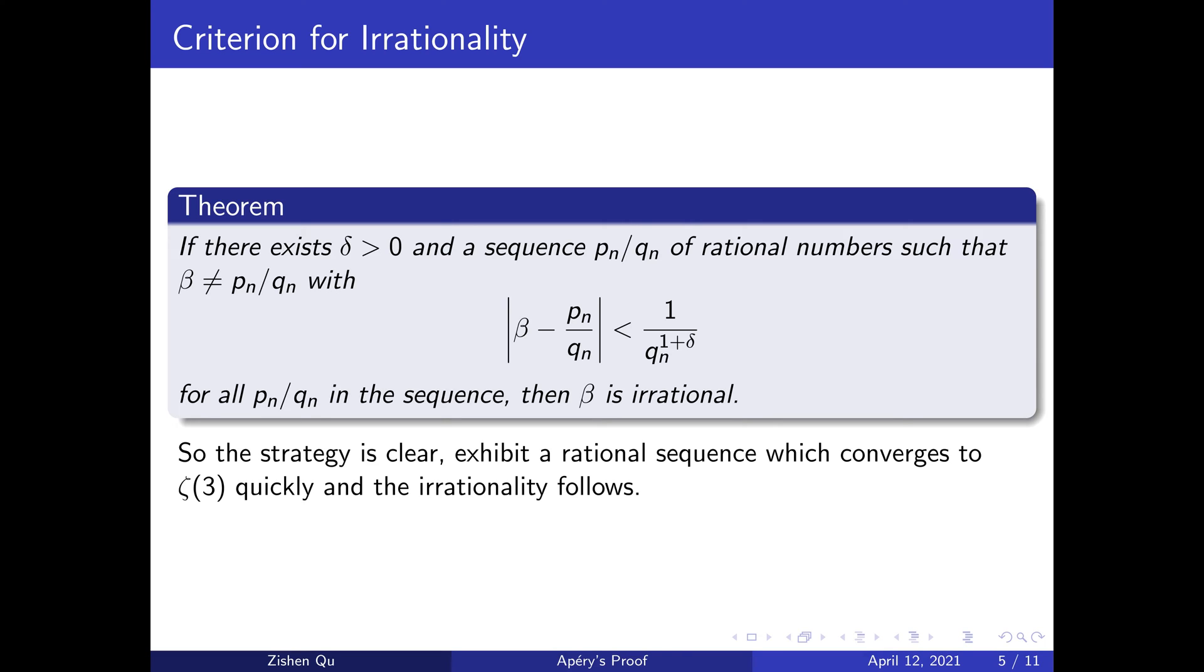In fact, this is an if and only if. What the theorem means is that irrational numbers are characterized by the fact that they can be approximated accurately by the rational numbers.